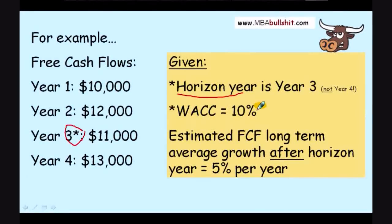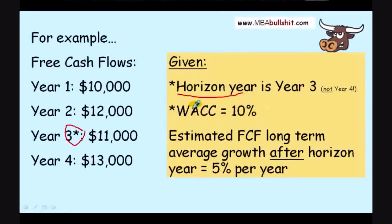The weighted average cost of capital is 10% — that is given. In more advanced problems, you will have to compute the weighted average cost of capital, the WACC, by yourself. If you don't know how to compute this, you can watch my other video about WACC.